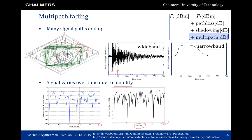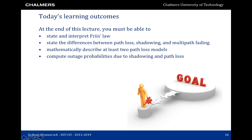These were the learning outcomes of today. We've seen Friis law, which you should be able to state and interpret, the differences between path loss, shadowing, and multipath fading, different path loss models — the single slope and multi-slope — and you should also be able to compute outage probability due to shadowing and path loss.